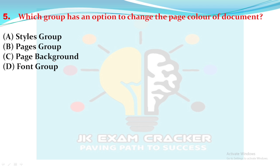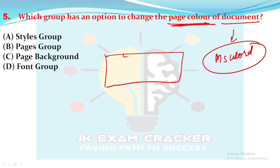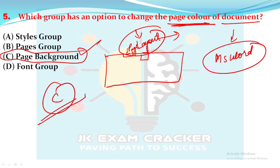Next question: which group has an option to change the page color of a document in Microsoft Word? In the Microsoft Word window, we have the Page Layout tab. Under Page Layout, there are options for margin changes, color changes, page orientation (portrait or landscape), and other page-related changes. When you want to change the page background color, that option is here in the Page Layout tab.